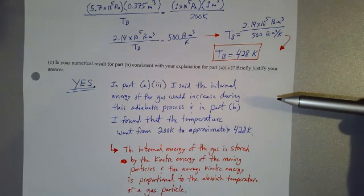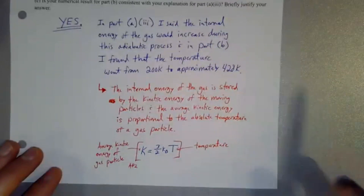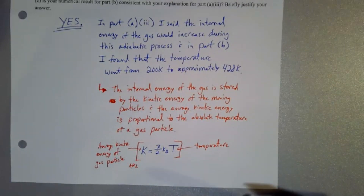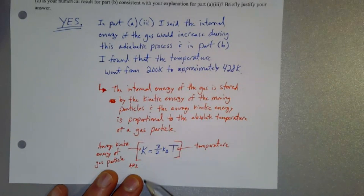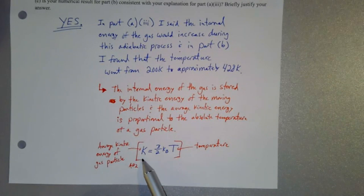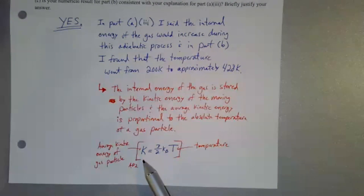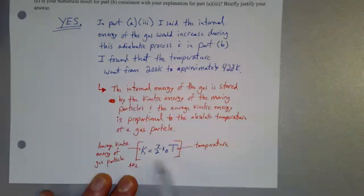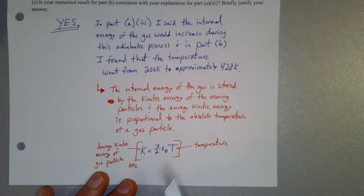The fact that we got a higher temperature for state B is consistent with expecting the internal energy to go up from state A to state B. Temperature is related to the average kinetic energy of a gas particle. The internal energy of a gas is essentially the kinetic energy of all the particles — a gas particle has no internal structure, it's a point particle, so the only energy it can store is kinetic energy. That's the link between internal energy and temperature.